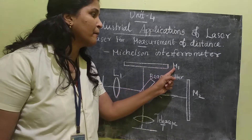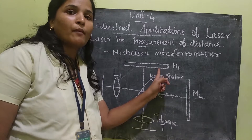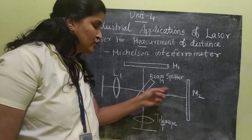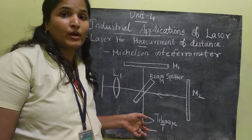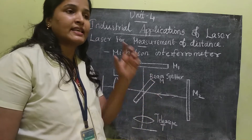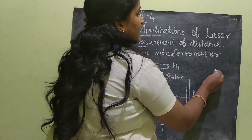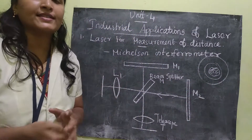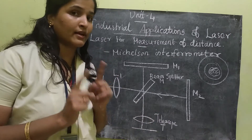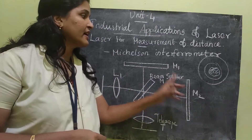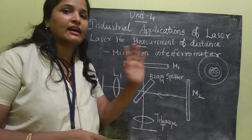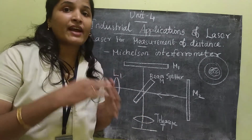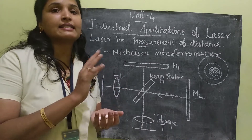Mirrors M1 and M2 should be perpendicular to each other. When they are perpendicular, the two beams falling on the telescope produce a circular interference pattern — alternating bright and dark circles. However, if any one of the mirrors is inclined, that is, tilted to some angle, at the telescope we will see a straight-line interference pattern instead.